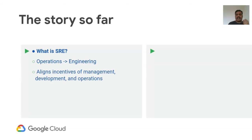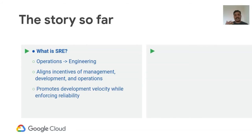One of the advantages of SRE is that it aligns the incentives of management, development, and operations. In the traditional ops world, there is this tension between the product team and the operations team. The product team wants to roll out features as fast as possible, while operations thinks changes break the system. There is no common vocabulary. SRE aligns incentives using common vocabulary, letting you have as much product development velocity as possible while also enforcing reliability.